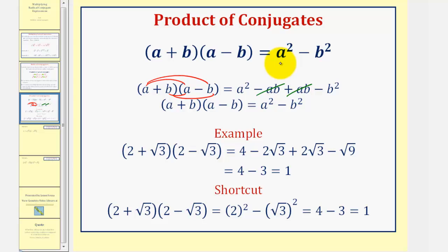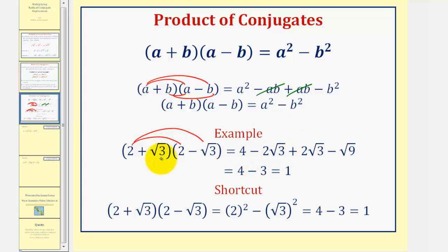But of course the shortcut is available if you want to use it. Let's look at an example: two plus square root of three times two minus square root of three. Using the technique to multiply two binomials, we have four products. Two times two is four. Two times negative square root of three is minus two square root of three. Square root of three times two is plus two square root of three. And square root of three times negative square root of three is minus square root of nine.